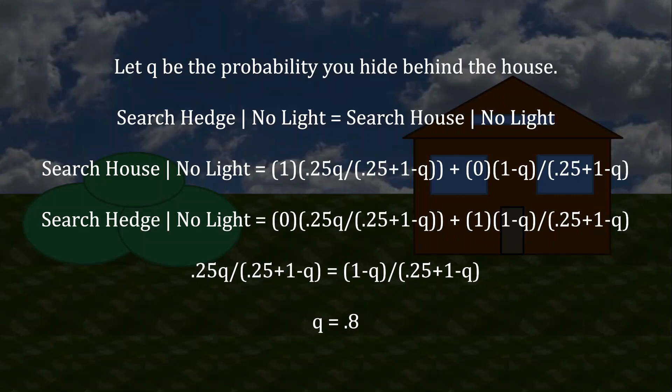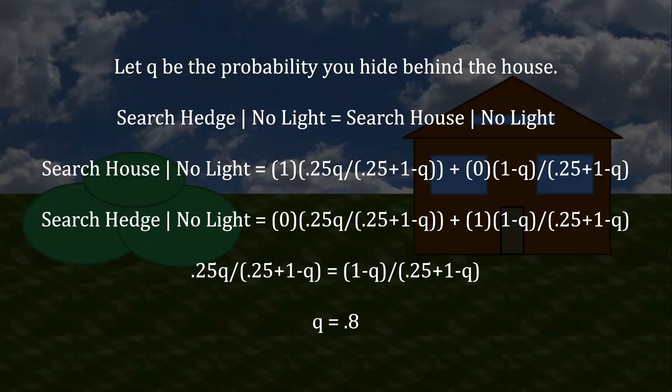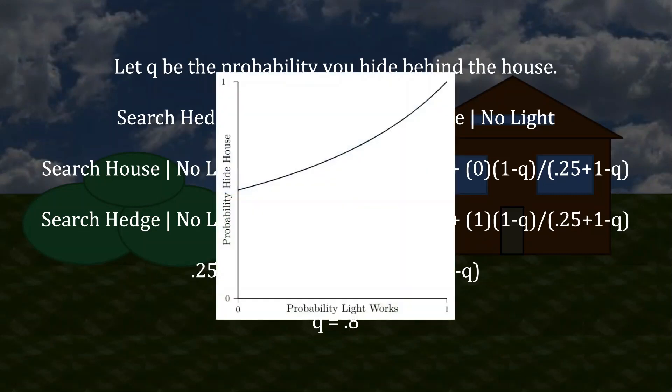We can also see that this relationship generalizes using this figure. Like the previous figure, the horizontal axis is the probability that the light works, and now the vertical axis is the probability that you hide behind the house. If the light never works, then you're in that 50-50 mixture. But as the light becomes more effective, you lean into the weakness, you hide behind the house more often, and indeed, as the light becomes perfectly effective, you go to hiding behind the house almost the entire time.